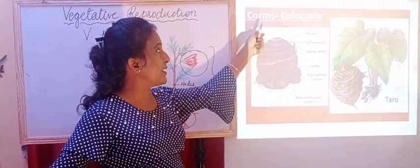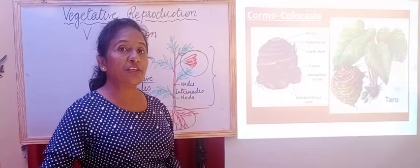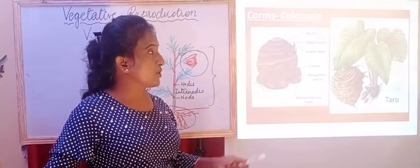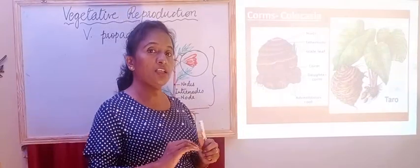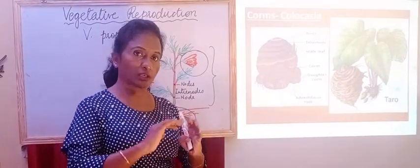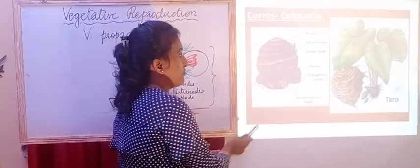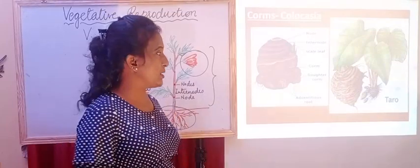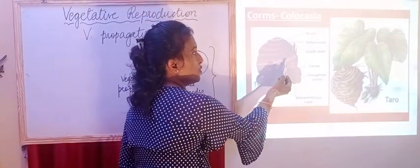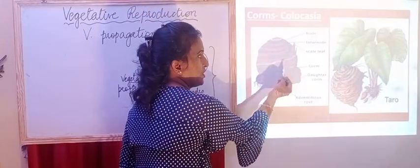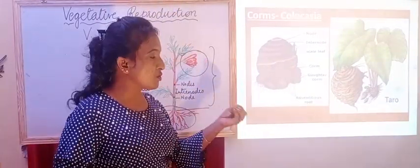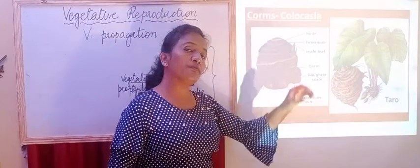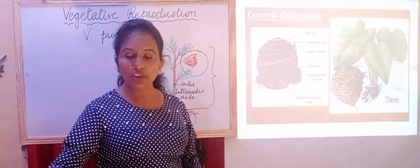Next example is colocasia, and the vegetative propagule is the corm. It is a round structure which also stores food material. Again it is edible. At the nodal region there are many daughter corms, and each daughter corm will give rise to a new plant.